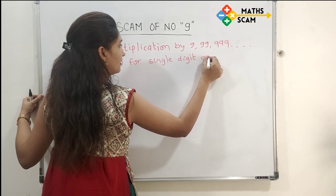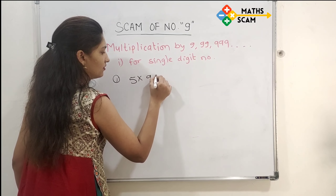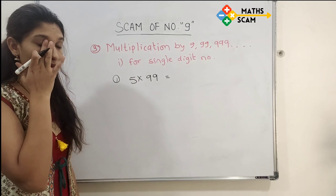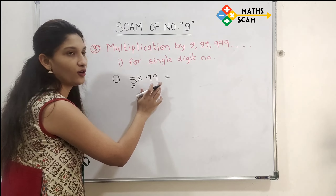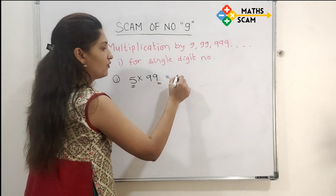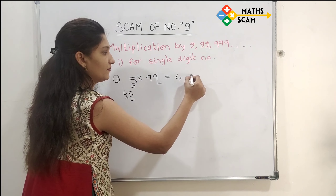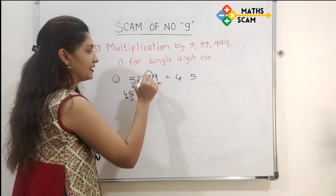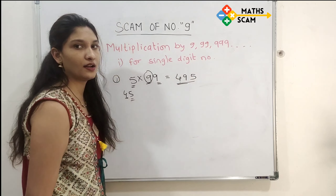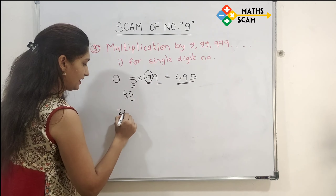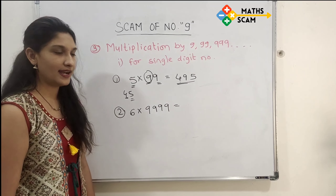Now for multiplying a single-digit number by 9, 99, 999, and so on. First example: 5 times 99. Multiply the first number by the last digit of 99: 9 times 5 is 45. Write 4 on the left side and 5 on the right side. There is one remaining 9, so write a single 9 in the middle of 4 and 5. The answer is 495.